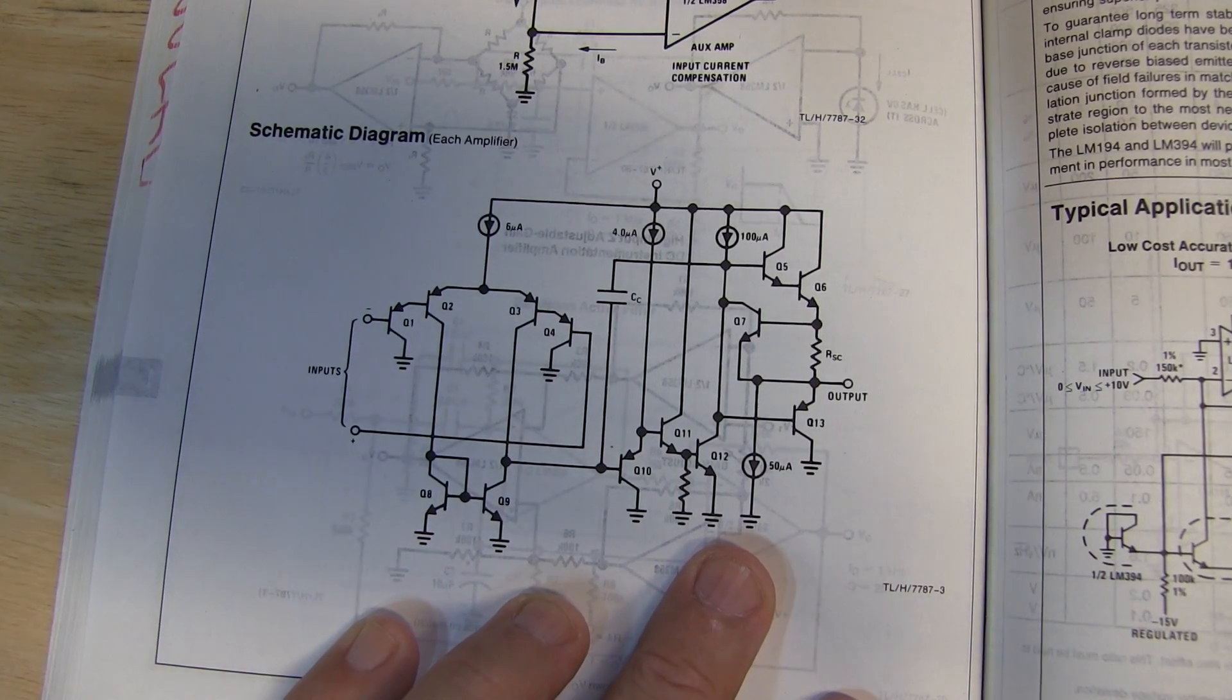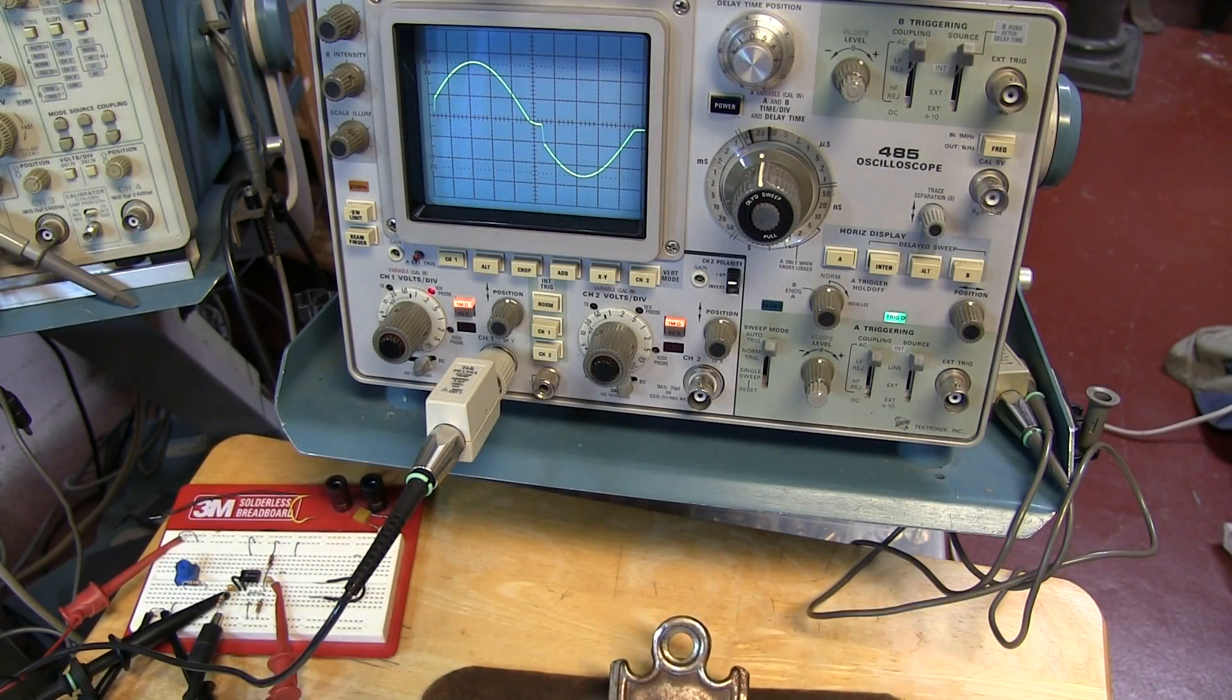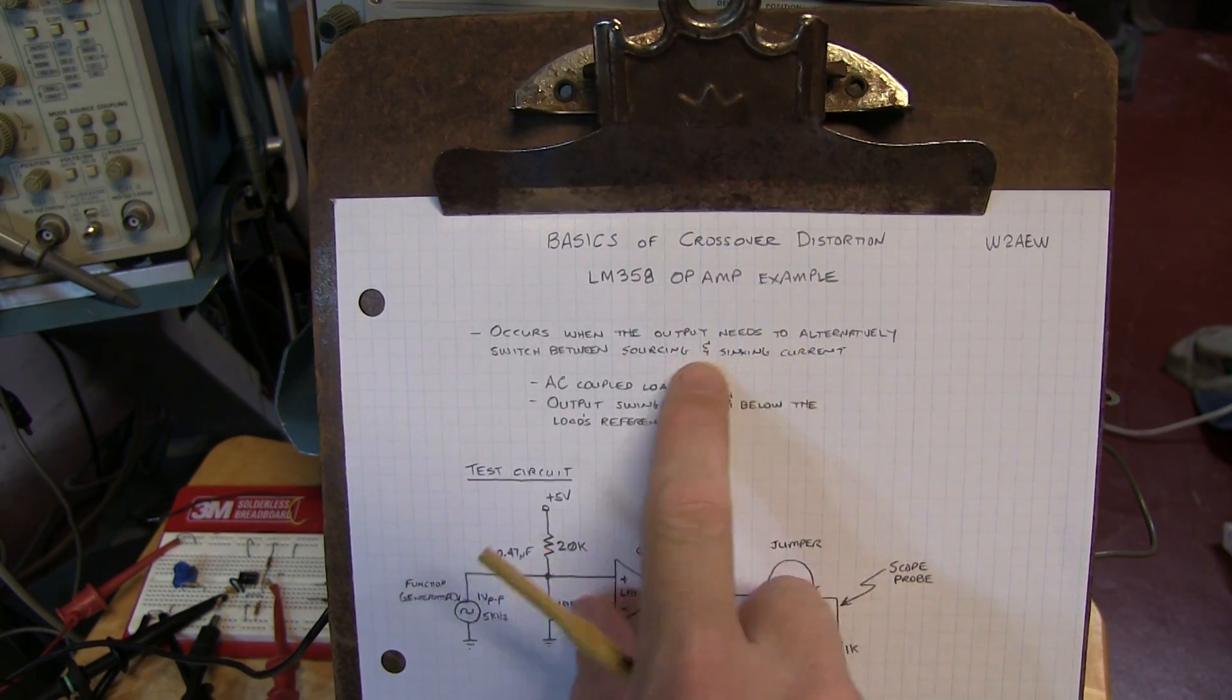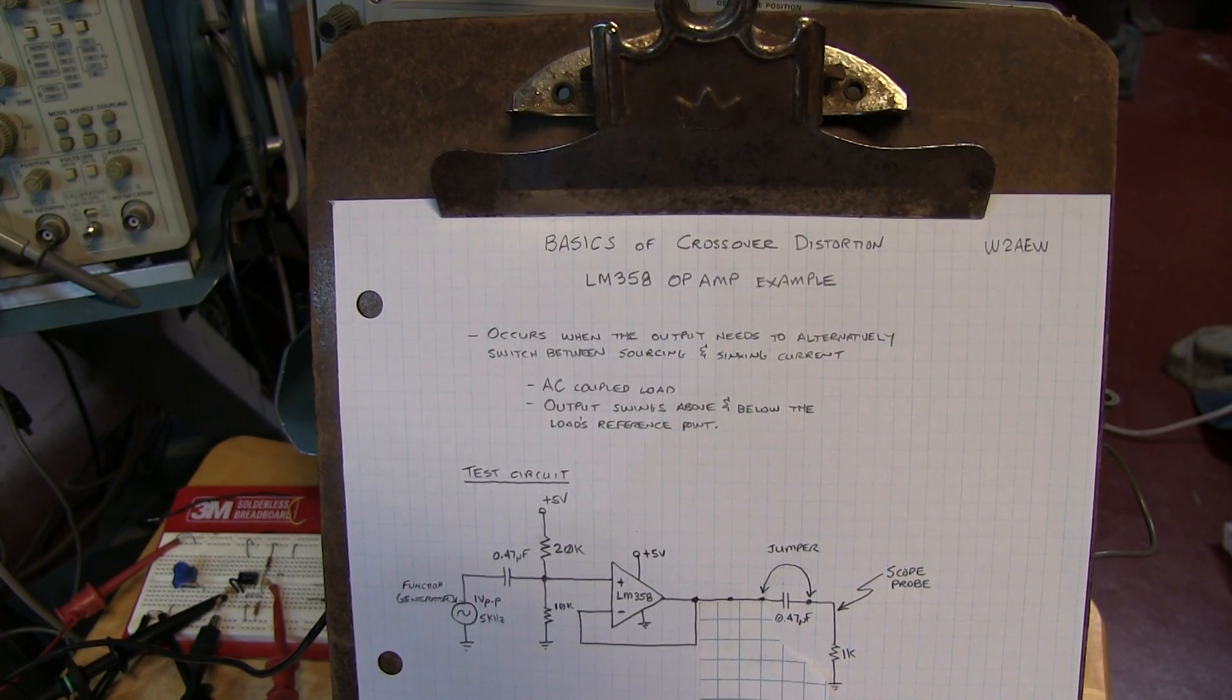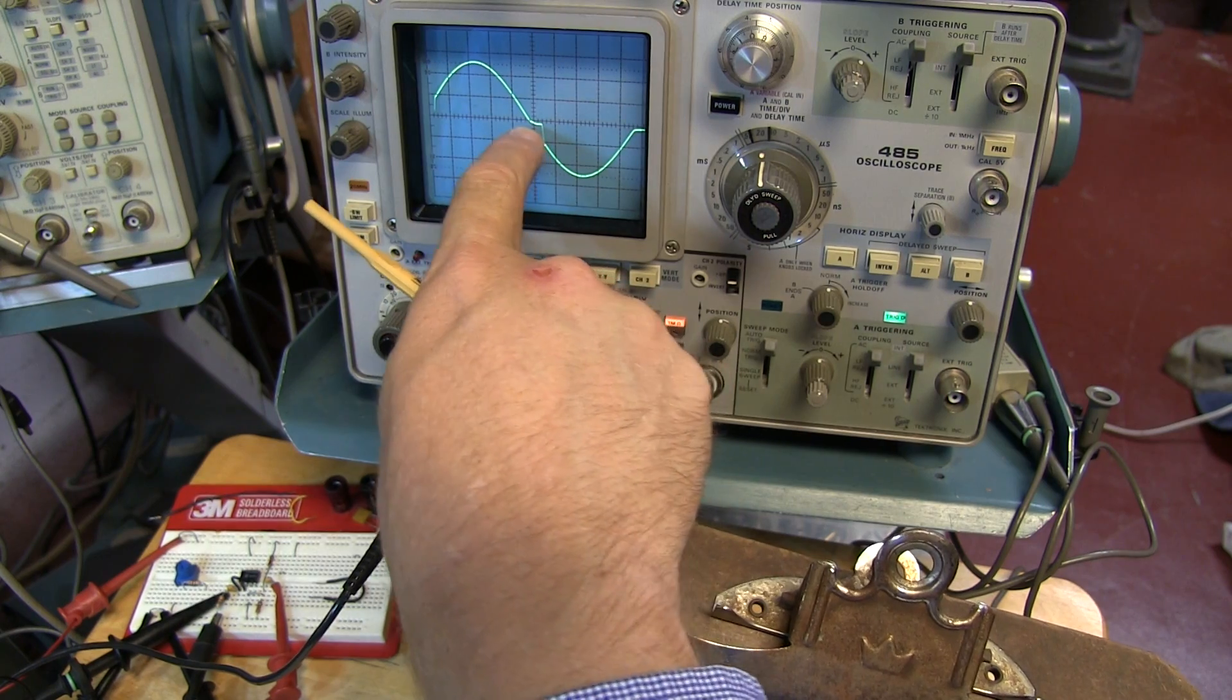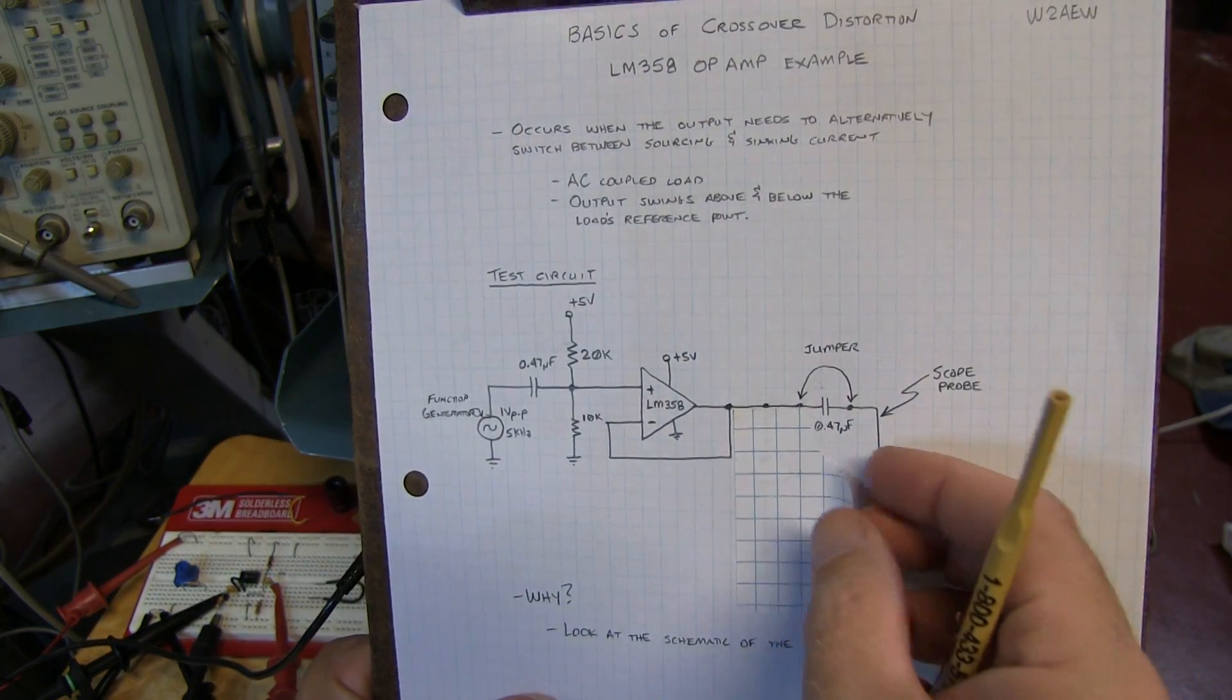And this actually gives us a clue of how to alleviate the problem of crossover distortion. To alleviate the problem, all we really need to try to do is keep the output stage from switching between modes. Always have the output source current or always have it sink it. And that's kind of the effect that we saw here. We're sourcing current out of those transistors a little bit longer by providing a little bit of a load to those upper transistors.